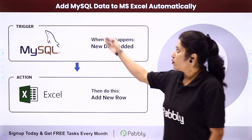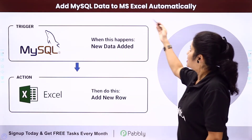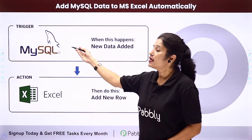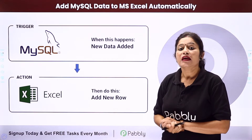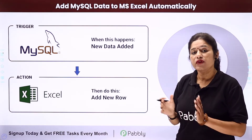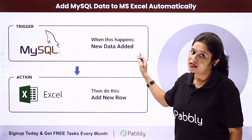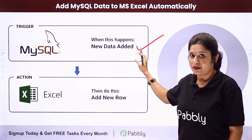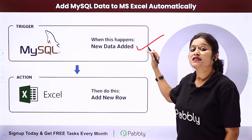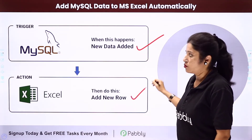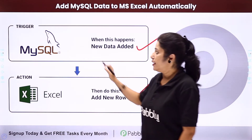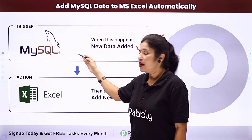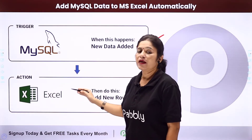In this video we are going to learn how you can add MySQL data to MS Excel automatically. The idea is that you are using MySQL as your database management software, and data is getting added from various sources to your MySQL database table. Whenever new data is added, automatically the same data should be added to your Excel spreadsheet. Your trigger application would be MySQL and your action application would be MS Excel.